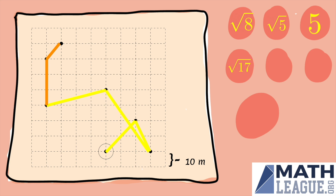And then once again, the square root of 17. This one's a straight line — don't have to use the Pythagorean theorem, it's just three. And then finally, one squared plus one squared — take the square root of that to get square root of two.